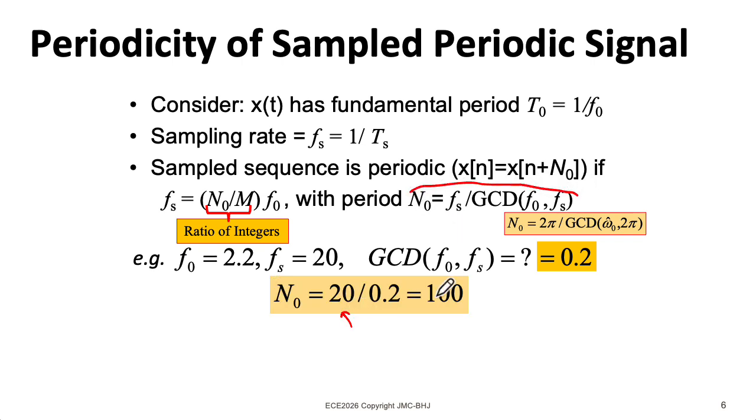And we can find the period of the sampled signal by using this formula here. The sample rate is 20. Our GCD is 0.2. So this will have a period of 100 samples in the discrete time domain.